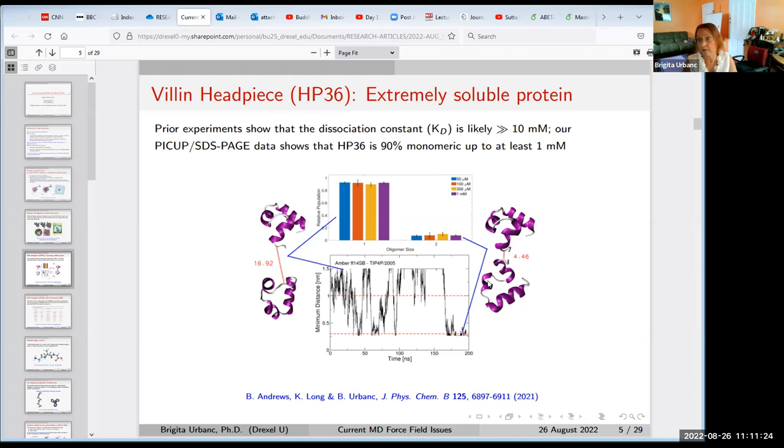We chose villin headpiece domain HP36, known to many people working in development of molecular dynamics forces. This protein is a native protein that adopts a native structure, stays helical, very stable helical. Older molecular dynamics force fields were using this villin headpiece to show that structure is really stable in their force field. The reason that is also interesting is that experiment shows it's extremely soluble.